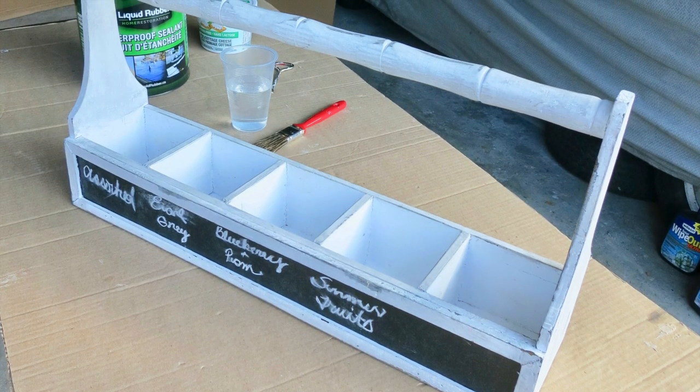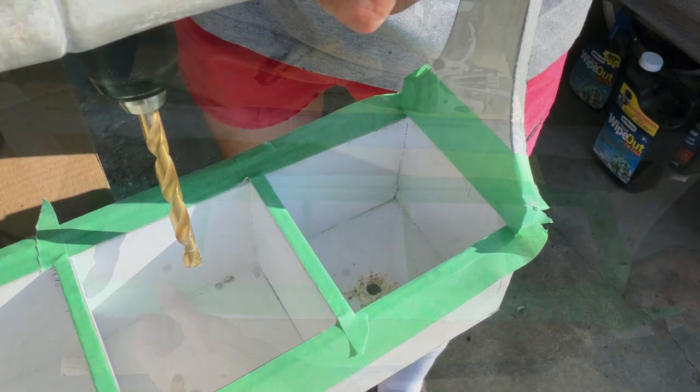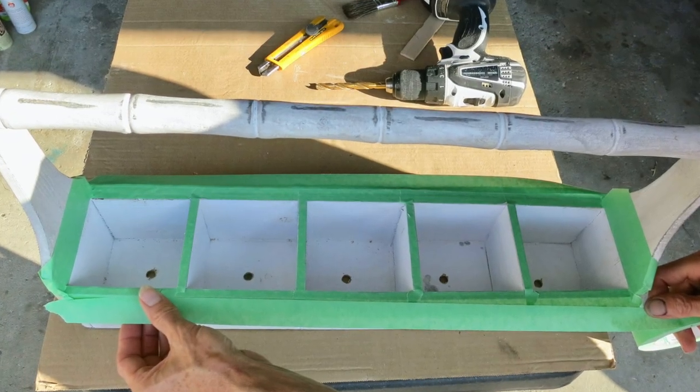After we give the tea caddy a thorough cleaning, we're going to tape it where we don't want to apply liquid rubber. If using this for outdoors, you're going to want to drill some drainage holes in the bottom. But if you're only using it for indoors, you can skip this step.